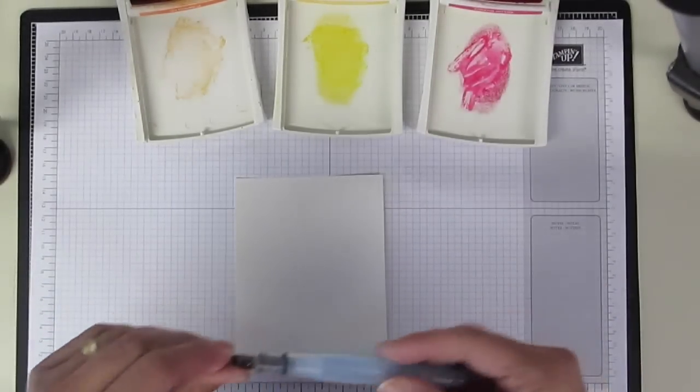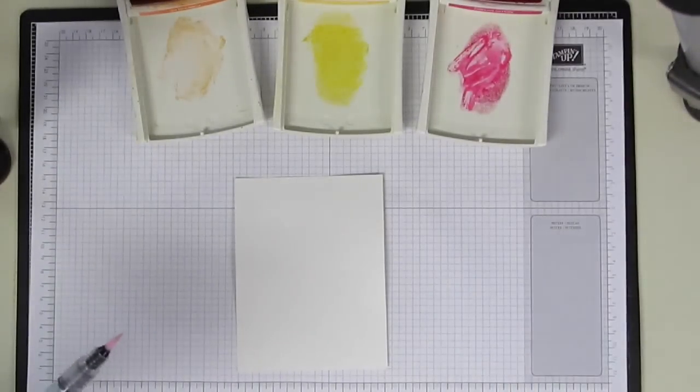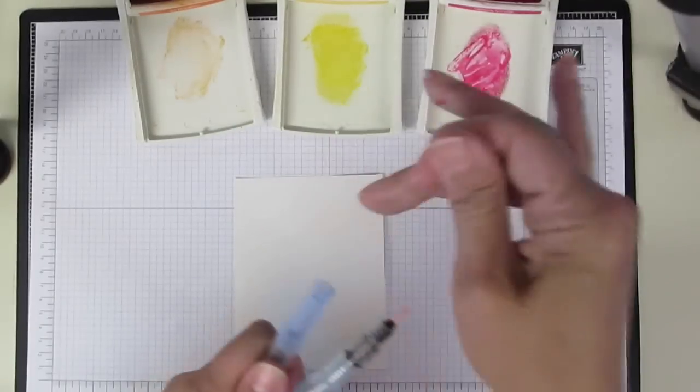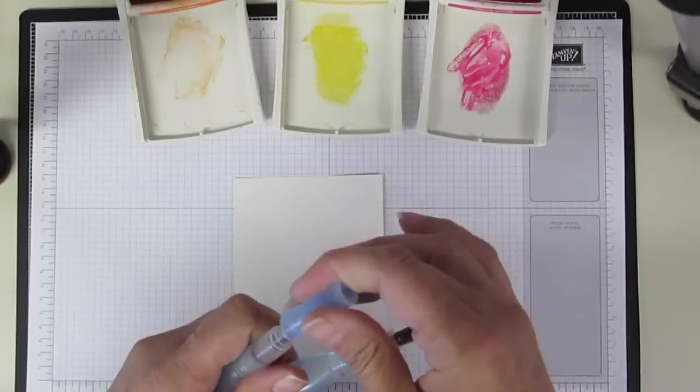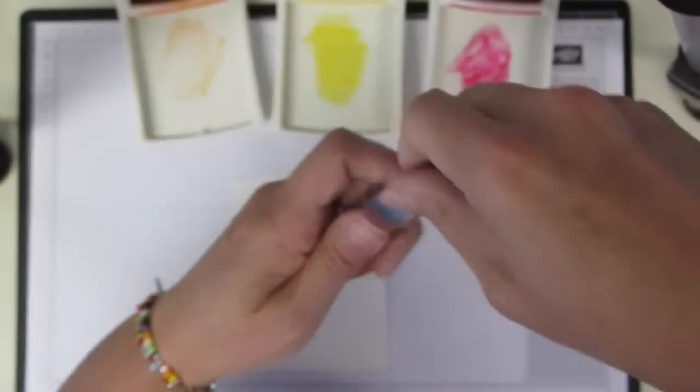I'm going to go ahead and use our aqua painters, and our aqua painters come two to a pack so you get two different aqua painters, one with a thinner brush and one with a bigger brush. I'm going to use the finest one, and in the tube here you just put water. This screws off and you put some water down in there and then you screw that back on.